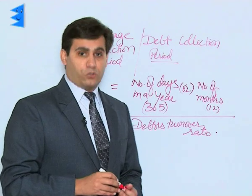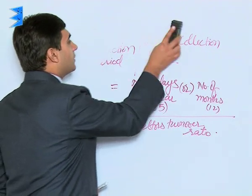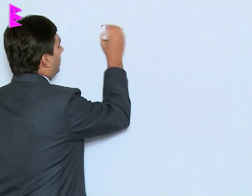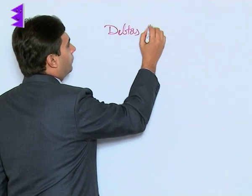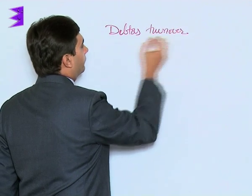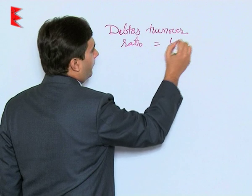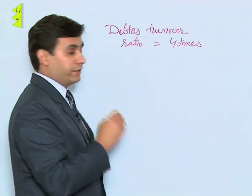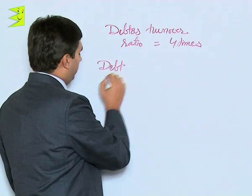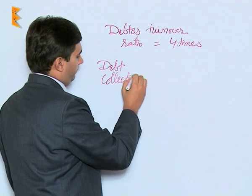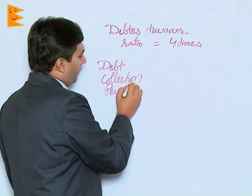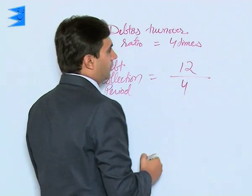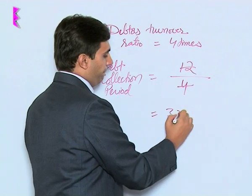In the previous question, we had calculated the debtors turnover ratio as 4 times. So if we want to calculate debt collection period, it would be 12 — that is number of months — divided by debtors turnover ratio, which is 4. That gives us 3 months.